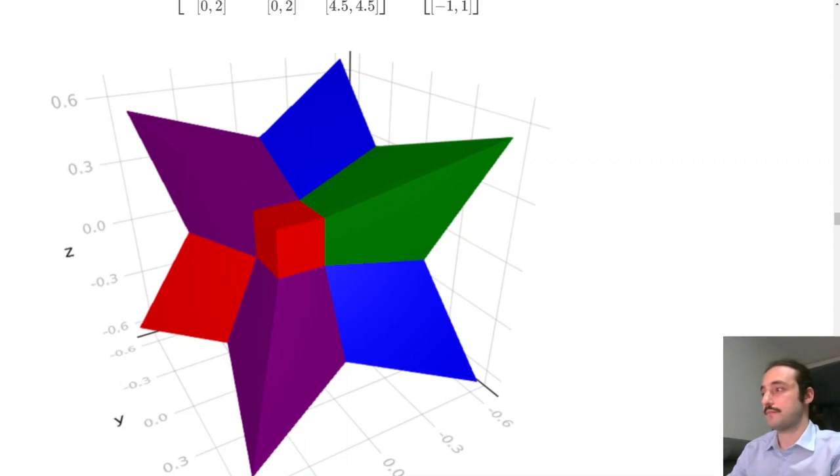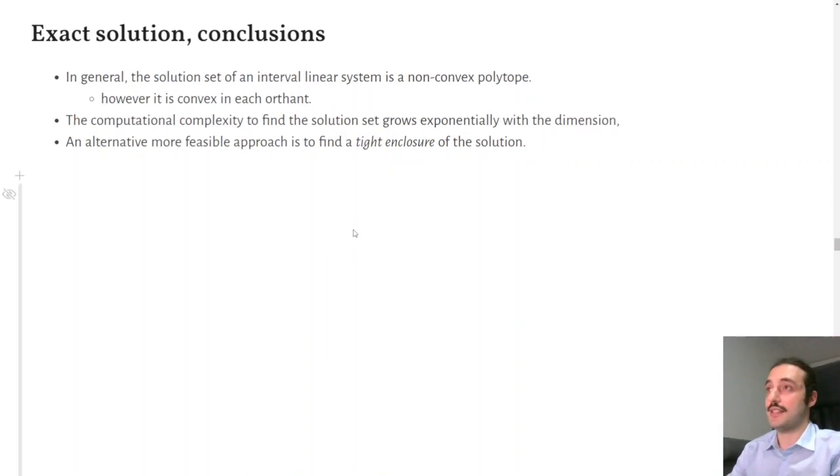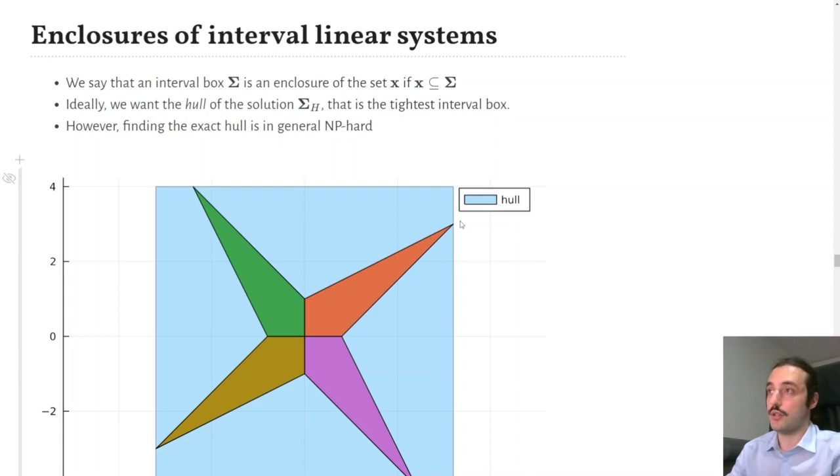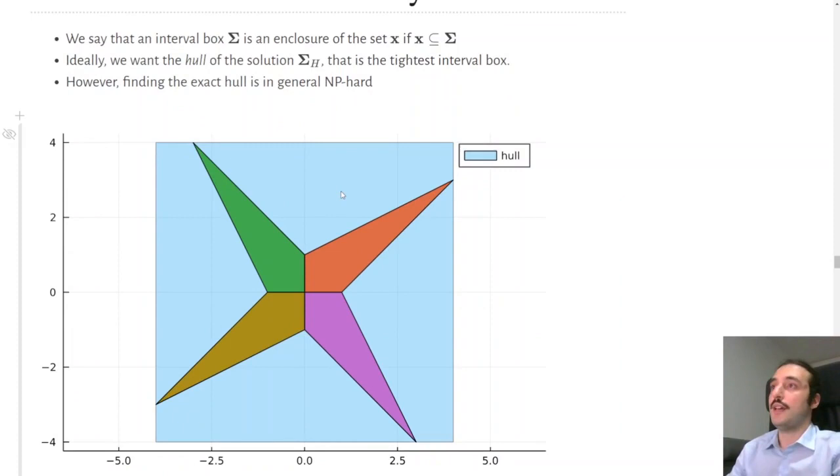So, to conclude, in principle, yes, we can characterize the solution set exactly. However, this has exponential complexity, and so it's not feasible for higher dimensions. So, what we want to do in practice is to find an enclosure of the solution set, an interval box containing the solution set. Ideally, we want the hull, the tightest interval box containing the solution set, but actually, it turns out that also finding the hull, unfortunately, is exponentially complex.